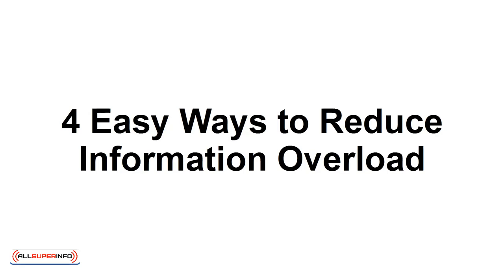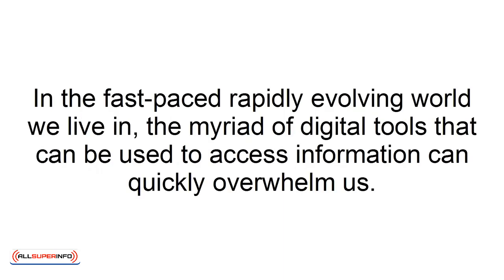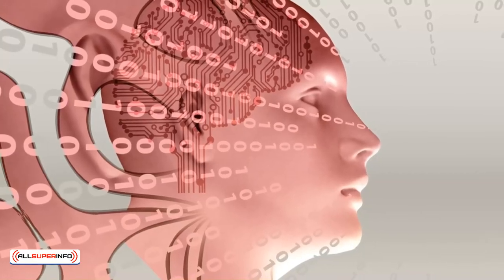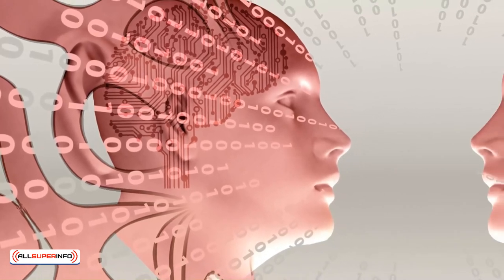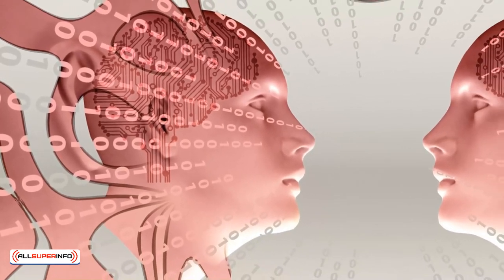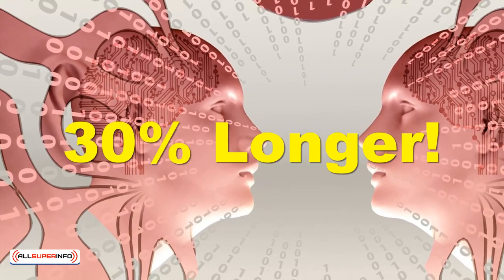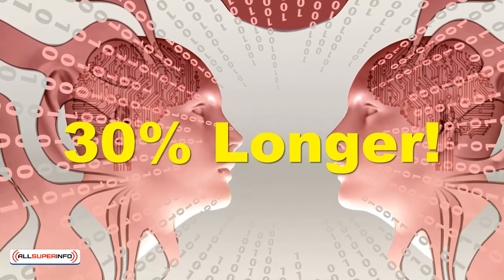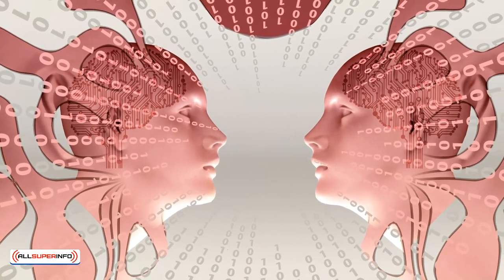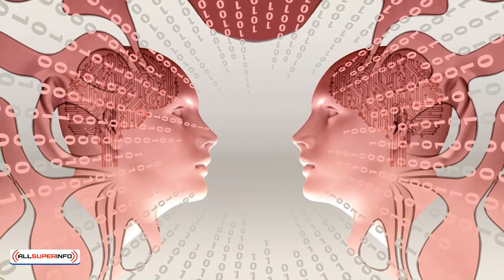In this presentation, I'm going to teach you four easy ways to reduce information overload in your life. In the fast-paced, rapidly evolving world we live in, the myriad of digital tools used to access information can quickly overwhelm us. Our brains are designed to only focus on one task at a time. When we try to focus on two tasks simultaneously, it takes us 30% longer to complete the tasks and we end up making more errors. To combat this issue, here are four easy strategies to reduce information overload.